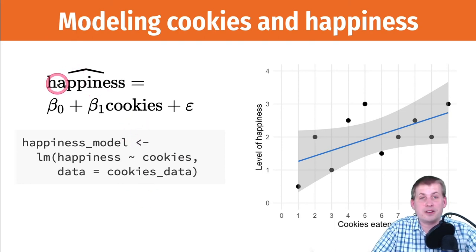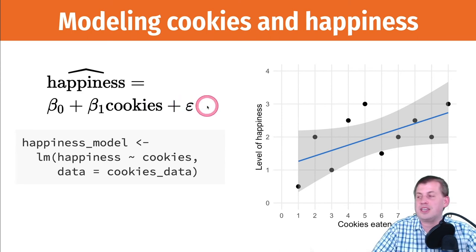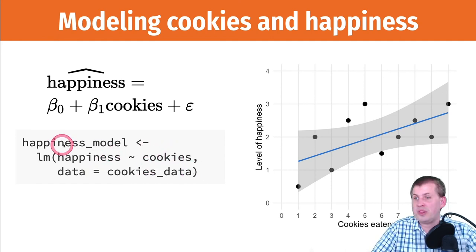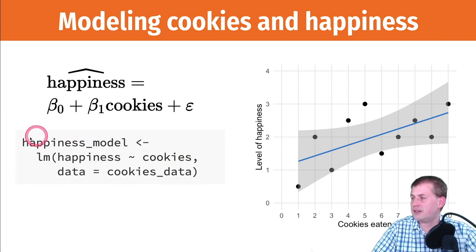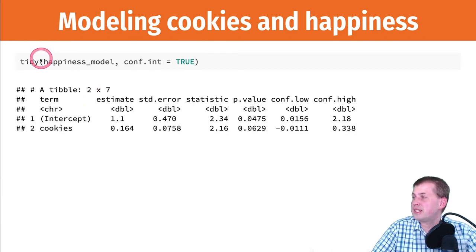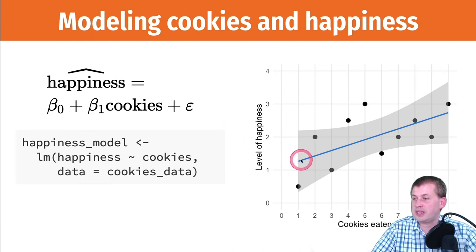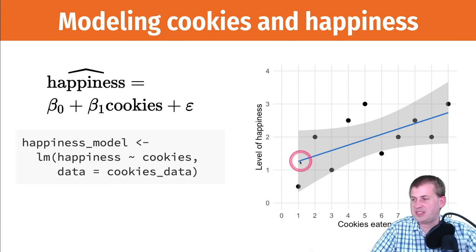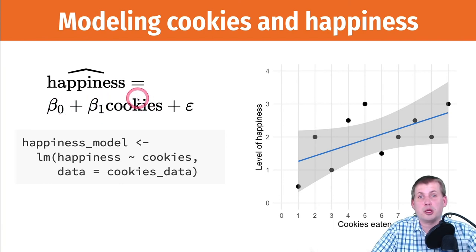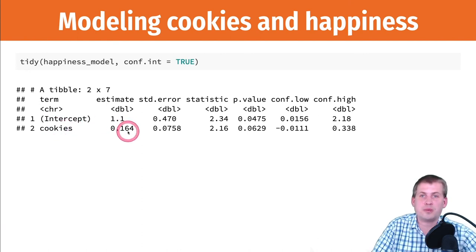Running the cookies and happiness model in R: predicted happiness is some intercept plus some slope times cookies, plus other stuff we can't measure. If we have a data set called cookies_data with columns happiness and cookies, we run lm(happiness ~ cookies, data = cookies_data) and store it as happiness_model. Running tidy() shows us the coefficients: the intercept is 1.1 — the line starts at 1.1 on the y-axis, which looks accurate on the graph.